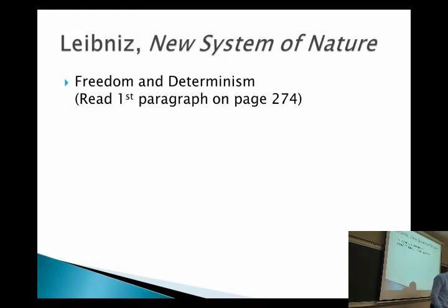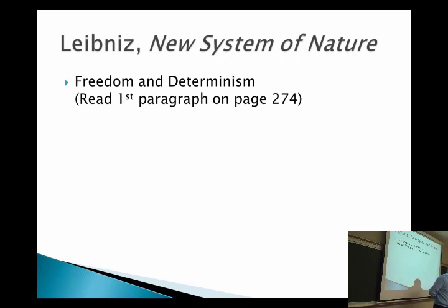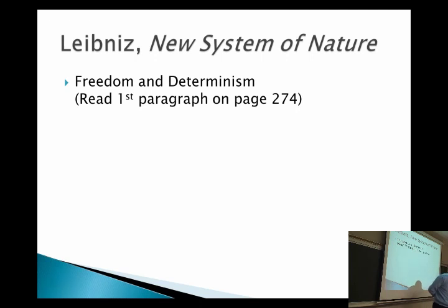Let's get to this because this is the ultimate question: what about my free will? Look at the first full paragraph on page 274. When he's talking about this view, he calls it the pre-established harmony of the universe. He says, 'It also has this great advantage, that instead of saying that we are free only in appearance and in a way sufficient for practical purposes, as several intelligent persons have believed, we should rather say we are determined only in appearance, and that in rigorously metaphysical language, we have perfect independence relative to the influence of every other creature. This also throws a marvelous light on immortality of our soul and the always uniform conservation of our individual being, which is perfectly well regulated by its own nature and protected from all external accidents.'